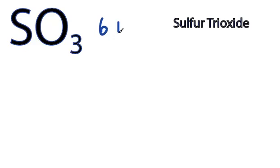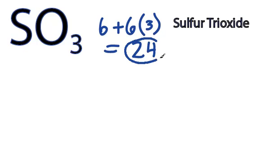Sulfur has six valence electrons. Oxygen has six, but we've got three oxygens, for a total of 6 plus 18, 24 valence electrons.